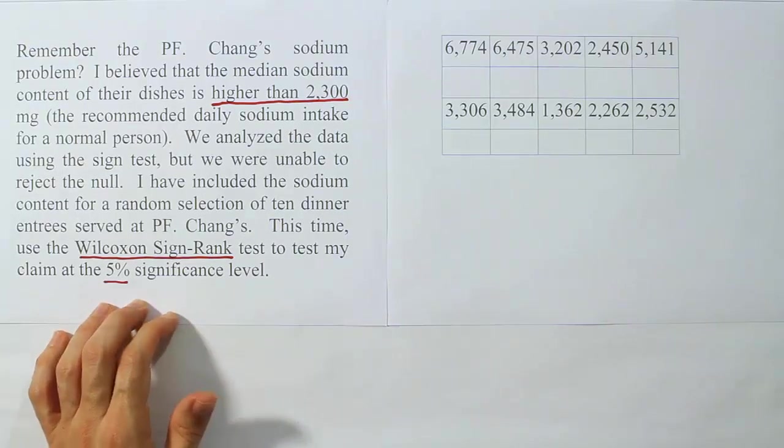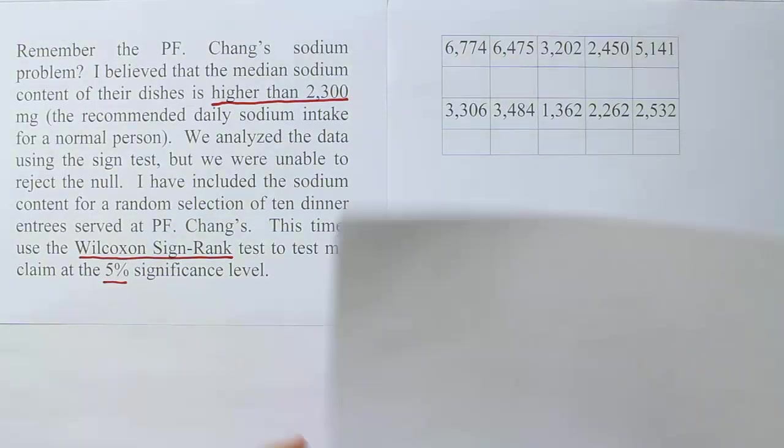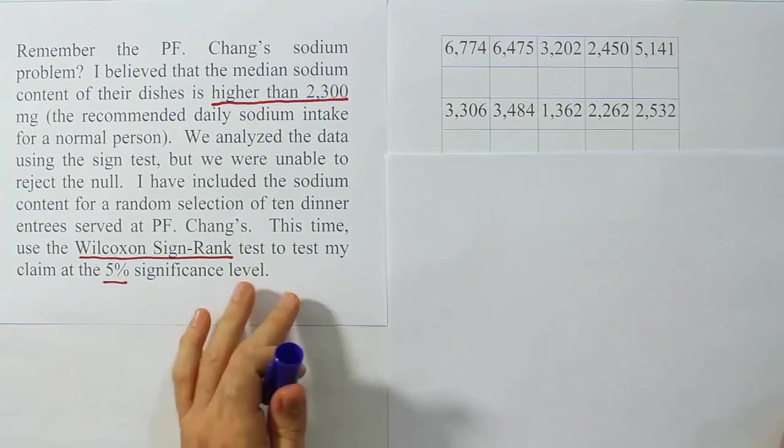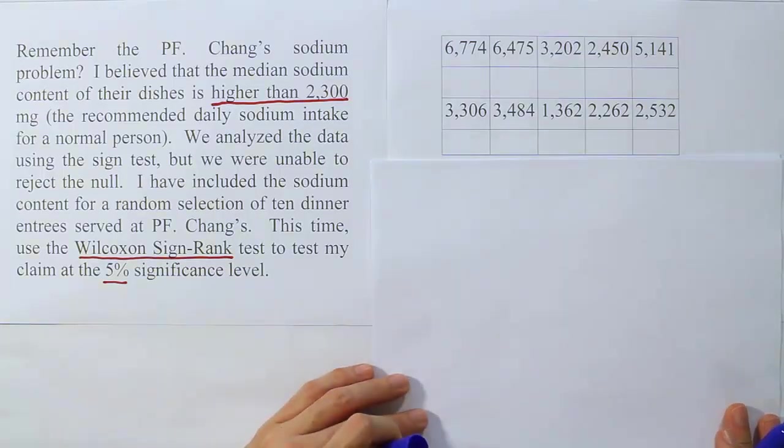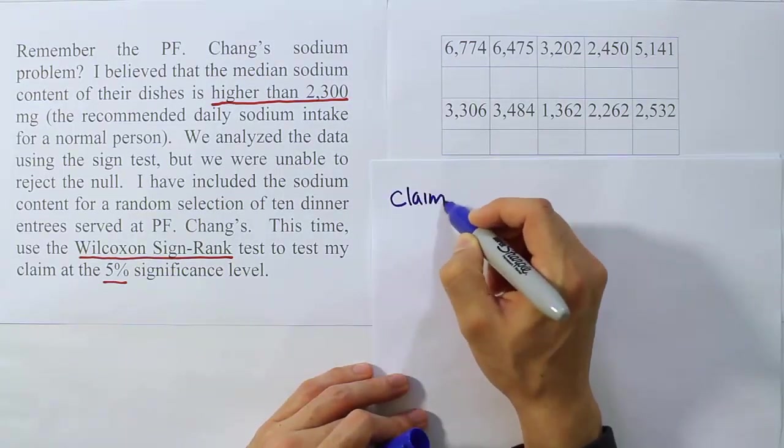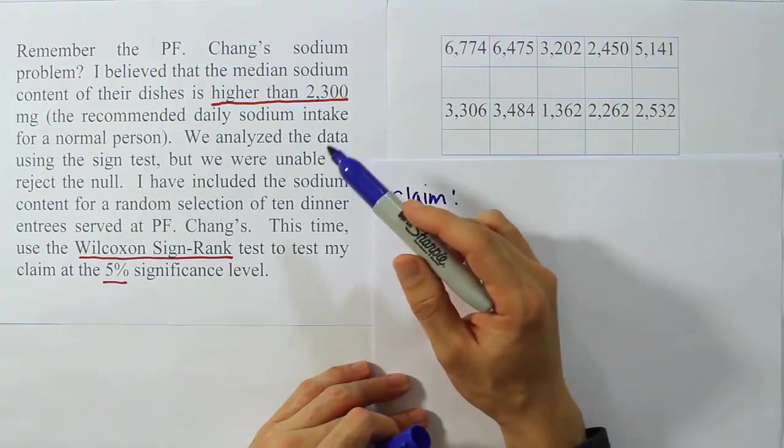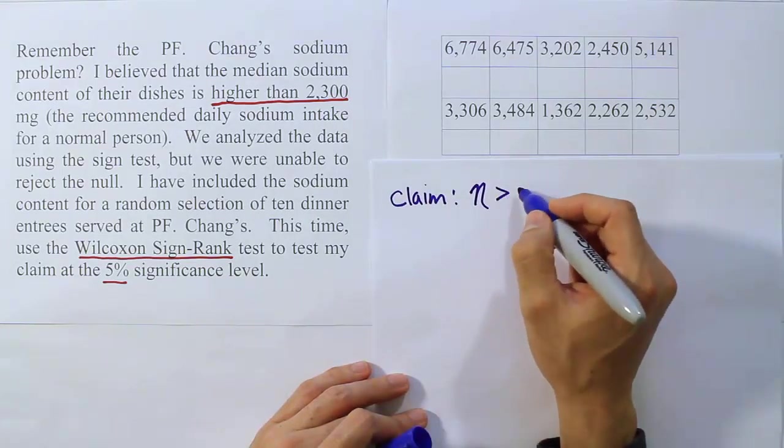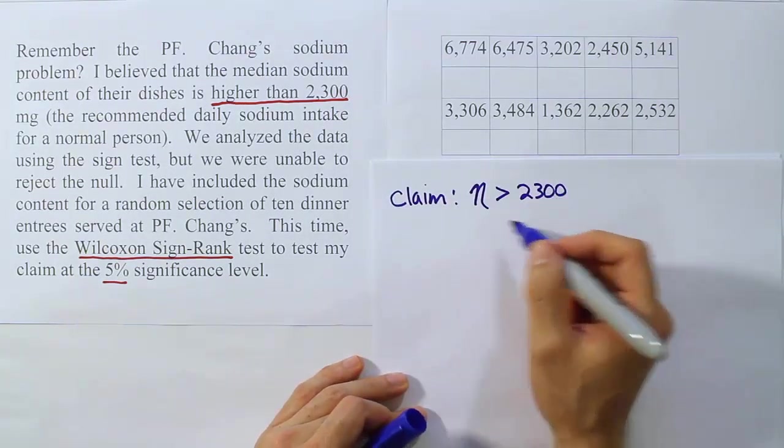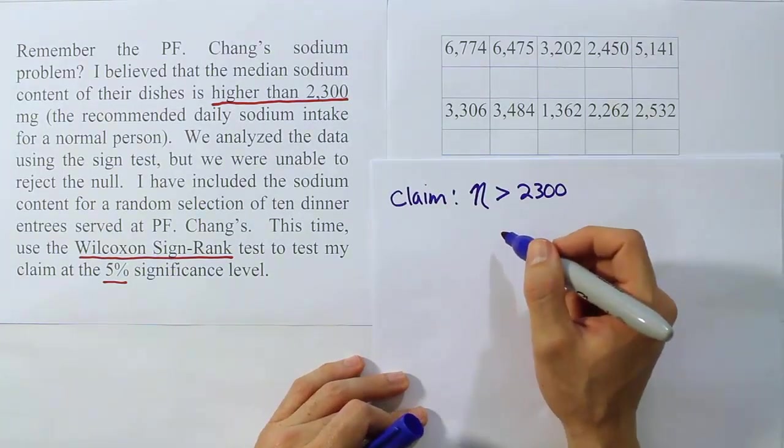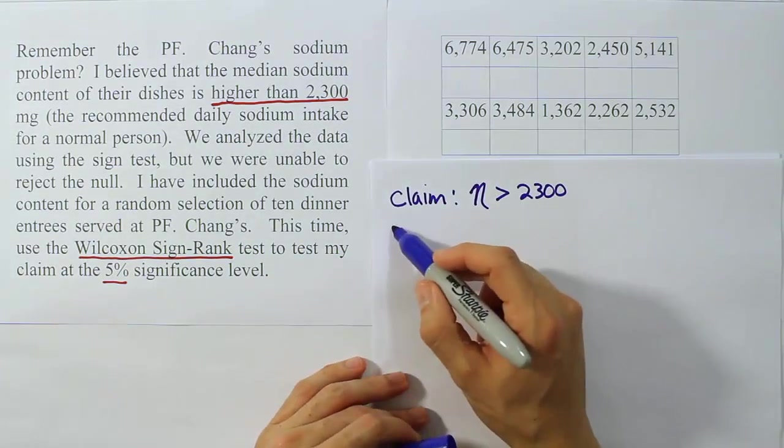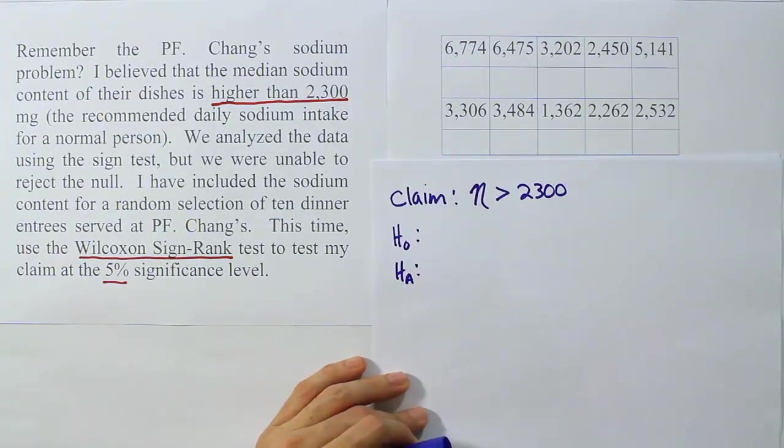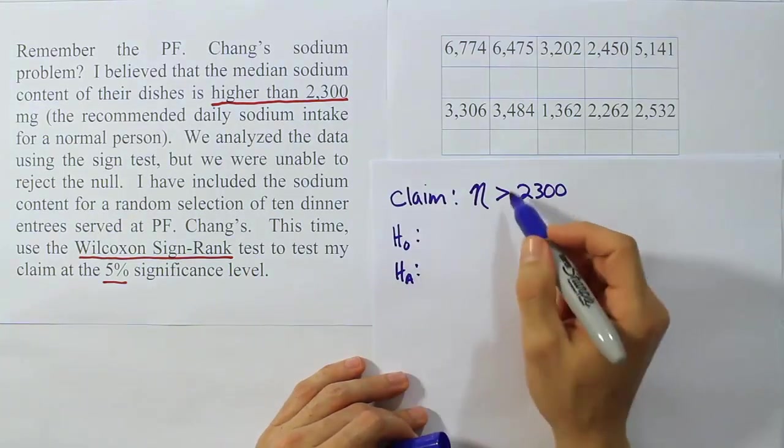First thing we want to do for any hypothesis test is express the claim. So the claim for this test is my claim from before that I believe the median sodium content is higher than 2300. So I believe that η is greater than 2300 milligrams. The claim looks a little different because we don't really have two sets of sample data here. H_0 and H_A still follow the same rules.